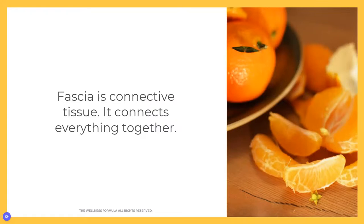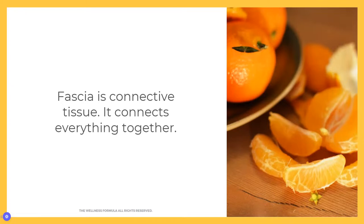Without fascia we'd just be a blob on the floor — it's what defines one muscle from another and an organ from surrounding tissue. I like to think of it like an orange: you have the skin on the outside, then that white pith layer when you peel it — that's a bit like the fascia we have under our skin. Inside the segments, there's a thinner white material separating them, and within each segment you can see white threads running through — that's how fascia envelopes and runs through our whole body.